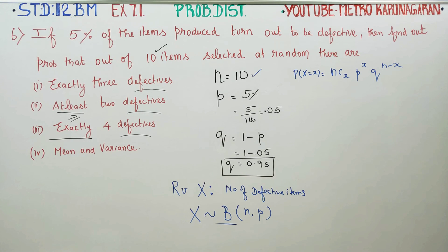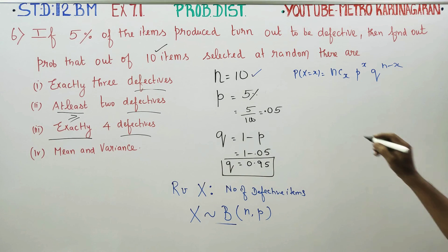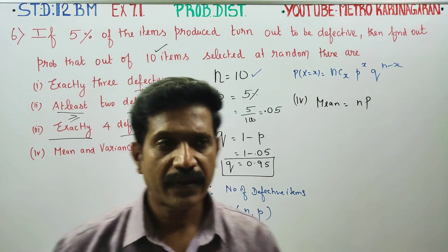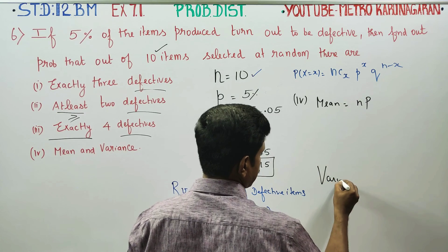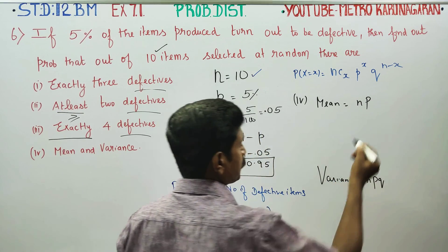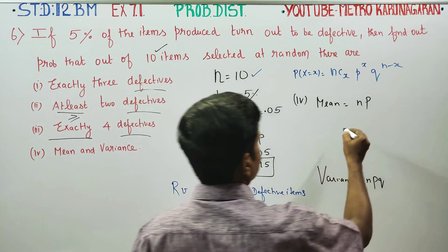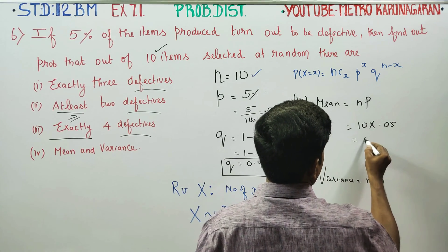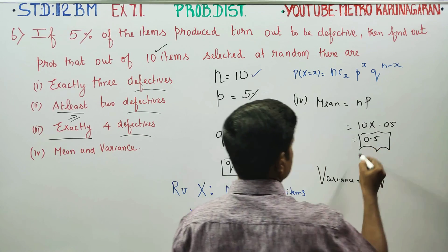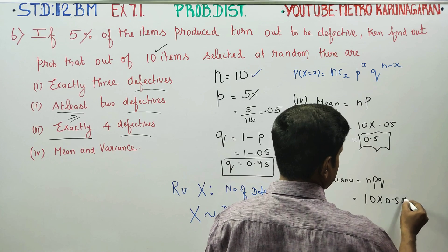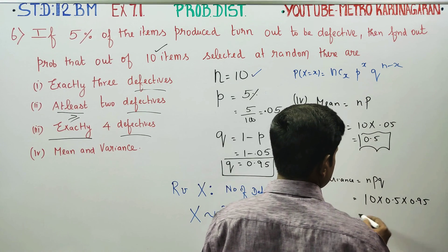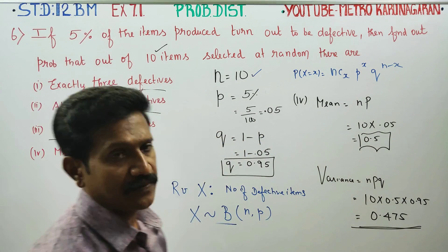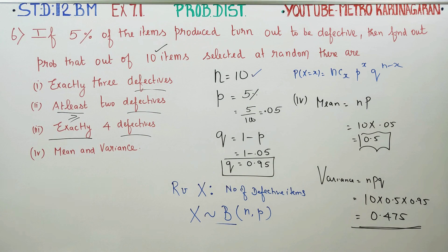The last subdivision is mean and variance. For a binomial distribution, mean equals n into p, that is 10 multiplied by 0.05, giving 0.5. Variance equals n into p into q, that is 10 multiplied by 0.05 multiplied by 0.95, giving 0.475. This completes Problem Number 6, which is a 5-mark sum. Practice thoroughly.